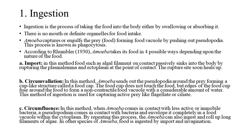C. Circumfluence: In this method, when amoeba comes in contact with less active or immobile bacteria, a pseudopodium comes in contact with the bacteria and envelopes it completely in a food vacuole within the cytoplasm. By repeating this process, the amoeba can also ingest and roll up long filaments of algae. In other species of amoeba, food is ingested by import and invagination.